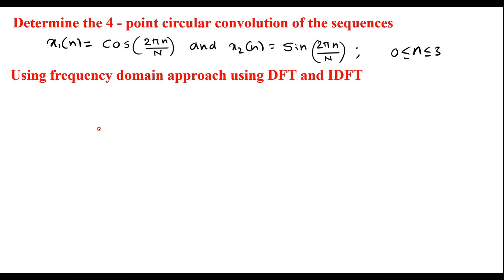In this video, I will find the circular convolution between two sequences using the DFT-IDFT method. We are to determine the four-point circular convolution of the sequences x1(n) and x2(n), using the frequency domain approach, which is also known as Stokamp's process.